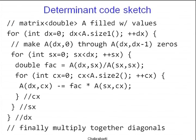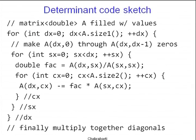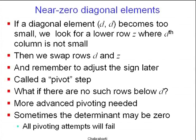We saw the code sketch — there is nothing particularly complicated about it, except for a little care with the indices. Once the matrix becomes entirely upper triangular, you can just multiply the diagonals to find the determinant. The only difficulty here is the pivoting part. We currently handle this by swapping rows, and any time you swap rows, you have to adjust the sign of the determinant.